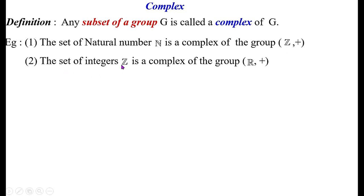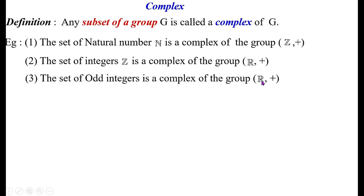The set of integers Z is a complex of the algebraic structure (R, +), since Z is a subset of the group R, that is, the set of real numbers together with the binary operation addition.